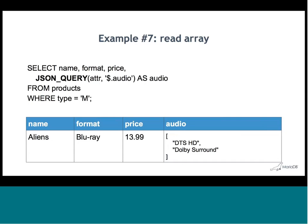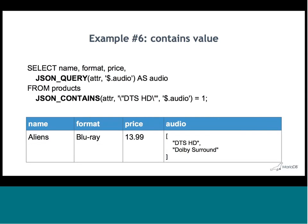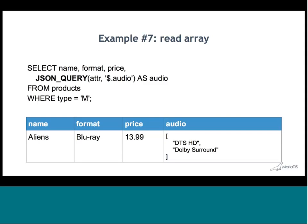Where things change a little is JSON_QUERY. JSON_VALUE returns a scalar; JSON_QUERY returns arrays or objects. In this example I want the audio array, which has two elements: DTS-HD and Dolby Surround. That's why if I check for DTS-HD using JSON_CONTAINS, it returns Aliens because it has DTS-HD as one of the audio options. Subtle difference between JSON_QUERY and JSON_VALUE — it just depends on what you're trying to pull out of that JSON document.